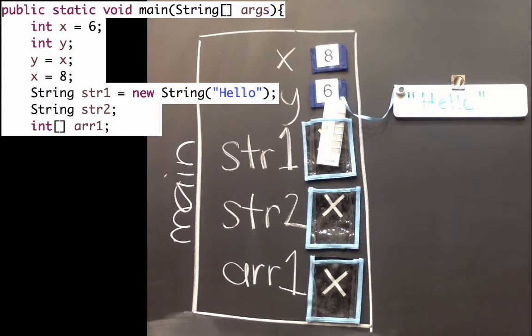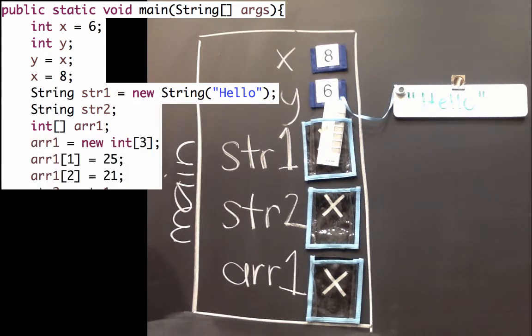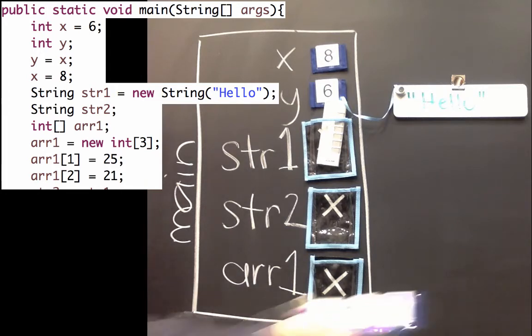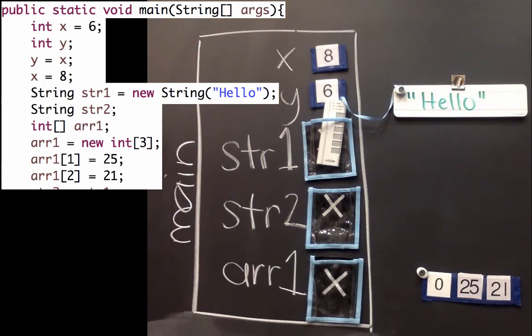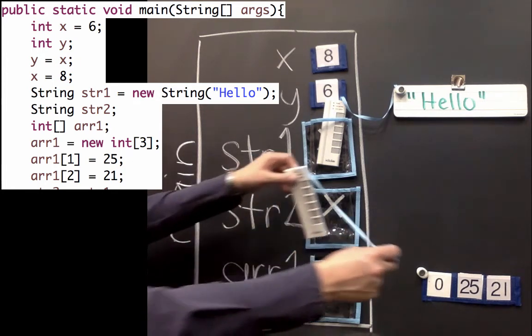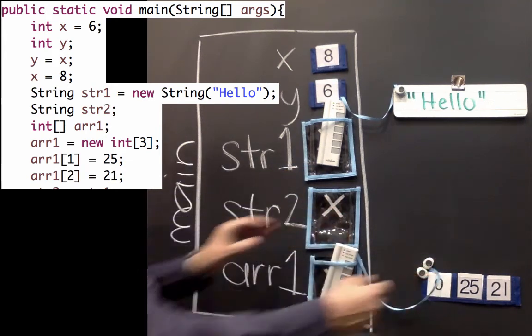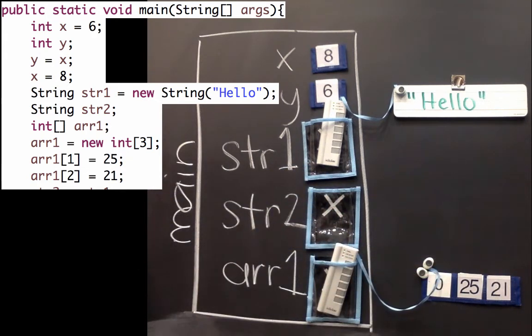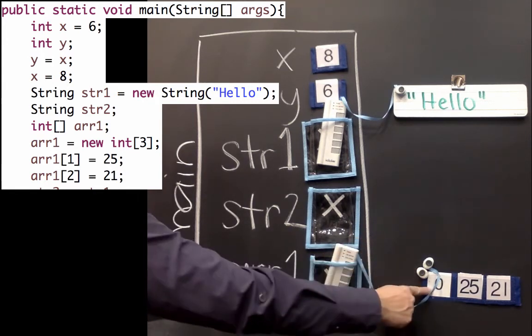Now this isn't permanent. We can add a line that sets arr1 or array1 to be an array with three elements. So the right-hand side makes an array with elements 0, 25, and 21. So the gets or equals sign creates a reference that points to that array. So now array1 is no longer null. We have a reference, and it references this array.